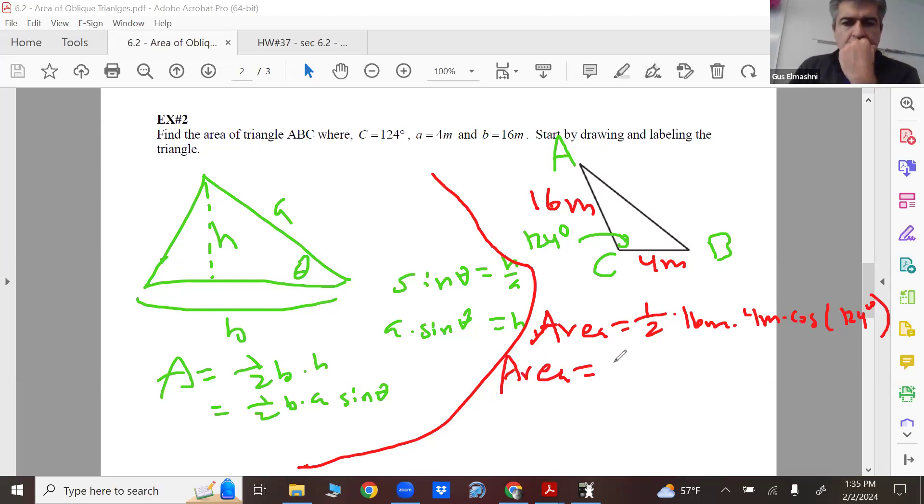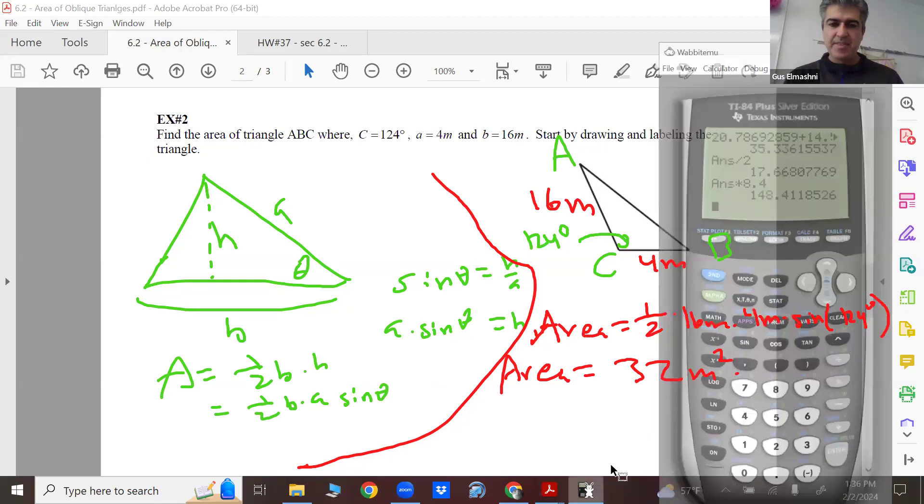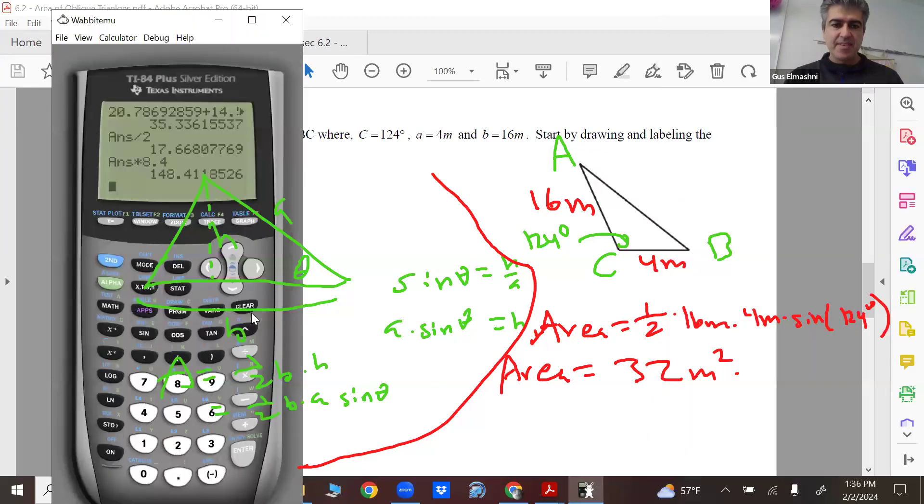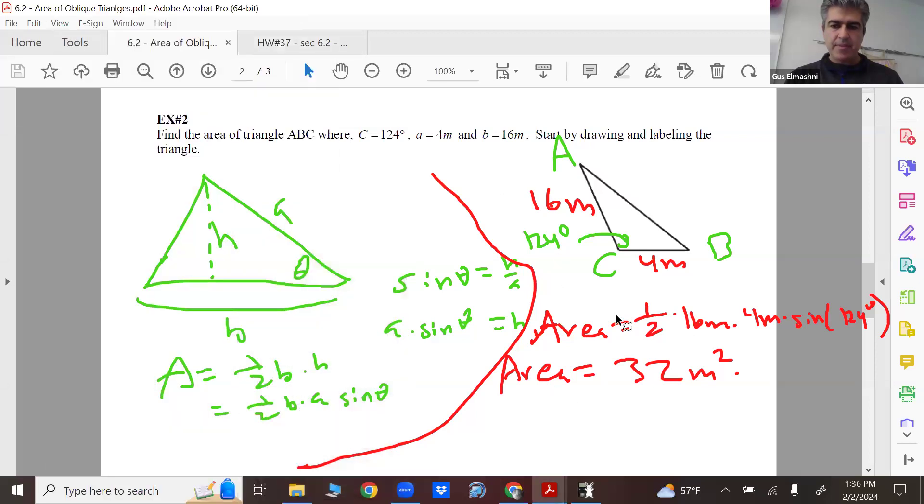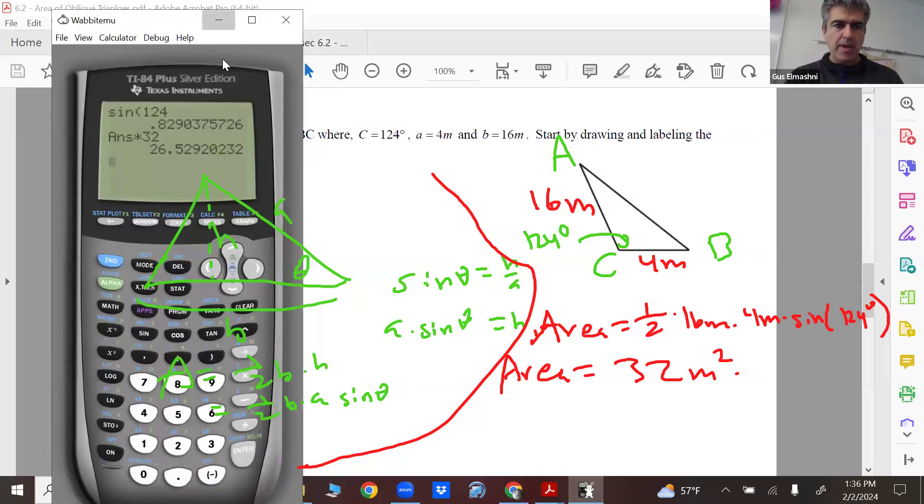And you work it out, you should get 32m squared. It was Friday afternoon and I'm tired, that's why. Sorry, it's sine, my bad. My apologies, thank you for catching that mistake. My apologies guys, yes it should have been sine. And what's sine 124? Sine times 32. Yeah, you get 26.5.